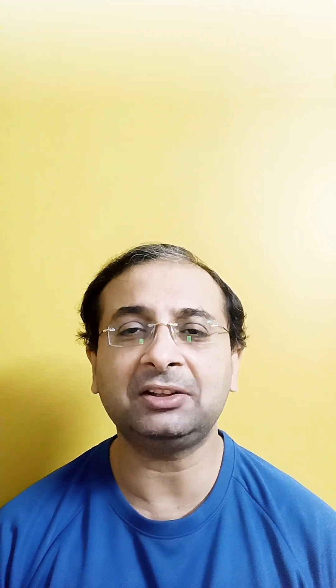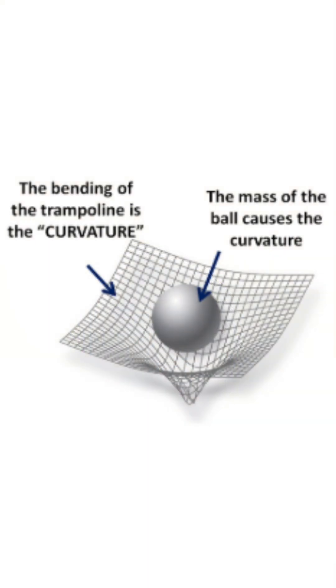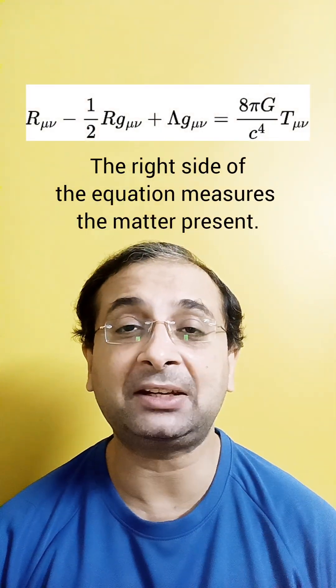As you can see on the right-hand side, this equation comprises what is called the matter content. Imagine a trampoline where there is a heavy ball or a heavy weight — this trampoline represents the curvature, which is the left-hand side, and the right-hand side is the matter, that is the heavy ball or the mass. Obviously, if mass is not present, how would the trampoline curve? How would space-time curve?